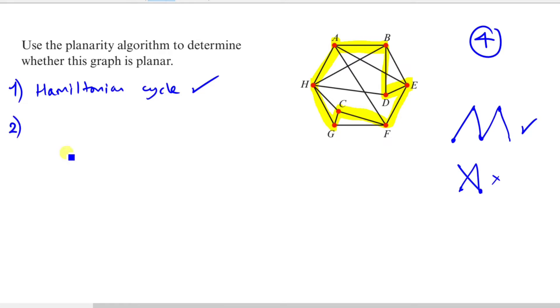Now our second condition is using the Hamiltonian cycle to redraw this graph in the new order with A, B, D, E, F, C, G, H and back to A.